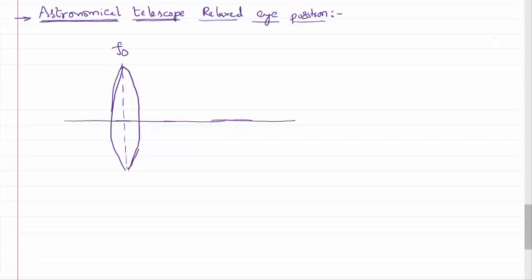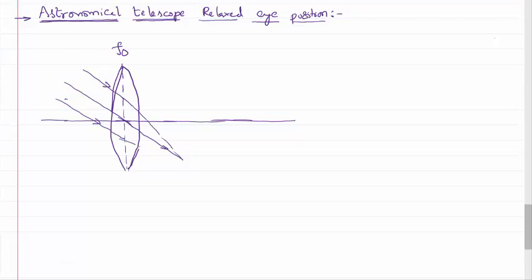I won't be able to see the object in the diagram because we are assuming an astronomical body that is quite far away. Being the object is quite far, the light rays coming from the object will be parallel light rays — so these are the light rays; the object is not visible in the diagram. Being the object is at an infinitely large distance, these light rays will come and converge at the focal length of the objective lens.